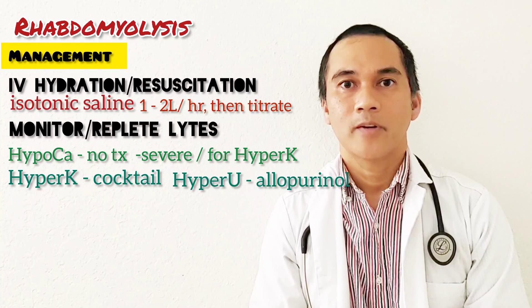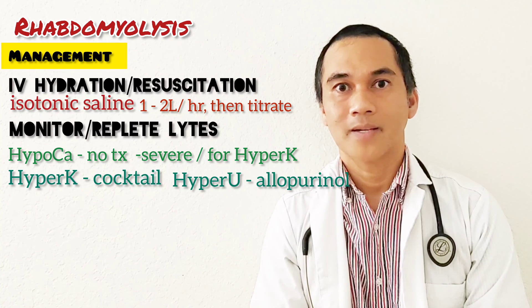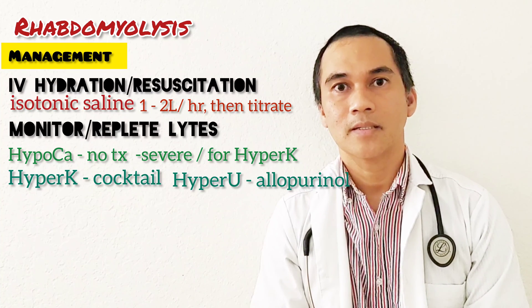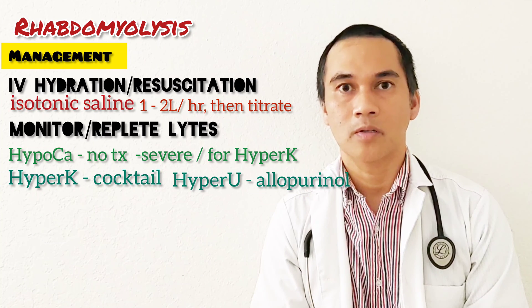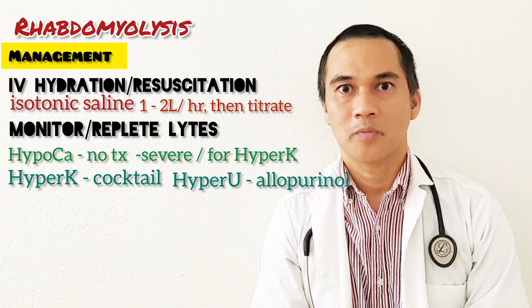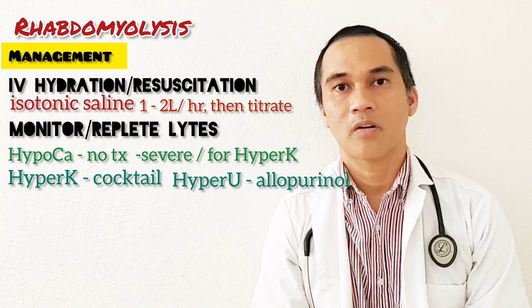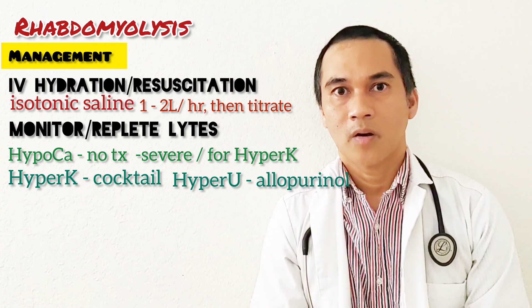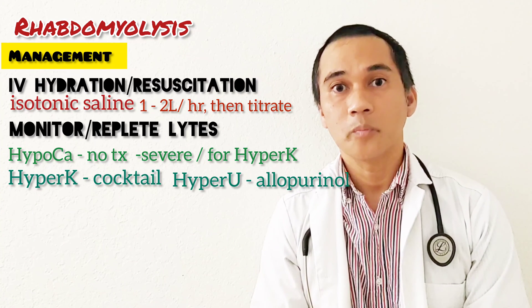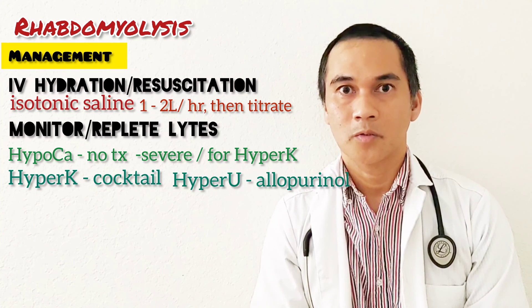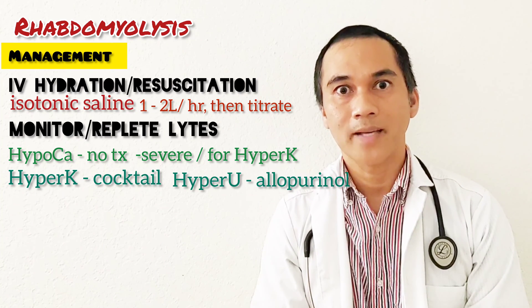For hyperkalemia, you give the cocktail: insulin, dextrose, calcium gluconate, and albuterol. Be cautious with albuterol because it can cause tachycardia — particularly in patients with cardiac disease. Also give allopurinol to reduce uric acid.